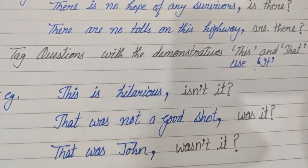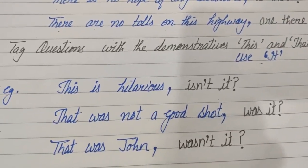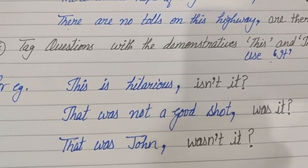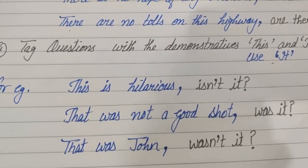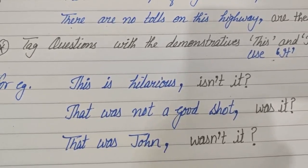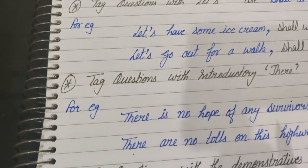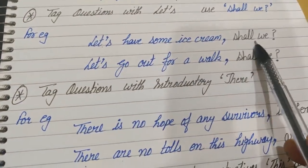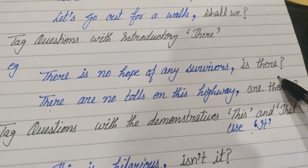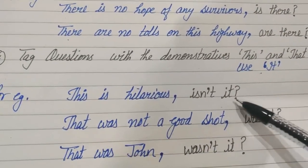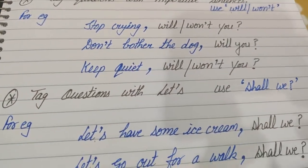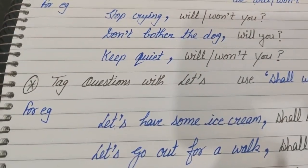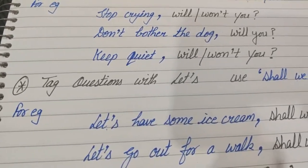So these are the rules of question tags — very simple. If the statement is positive, create a negative tag. If the statement is negative, create a positive tag. If it starts with 'I am,' use 'aren't' or 'ain't.' If there is 'let us,' use 'shall we.' If there is introductory 'there,' then use 'there' only. If 'this' or 'that' is there, use 'it.' And for imperative sentences, use either 'will' or 'won't.' Revise these rules and complete the exercise. Bye, have a great day!